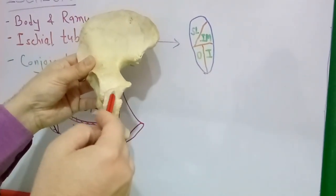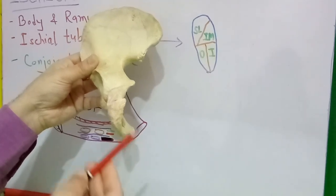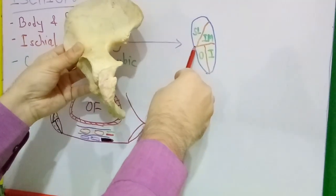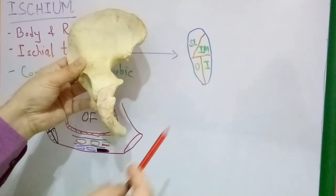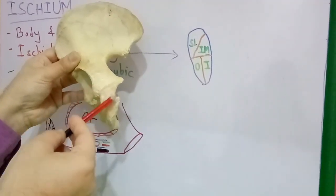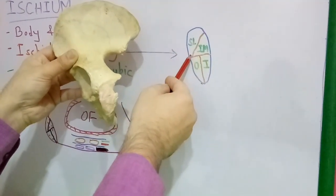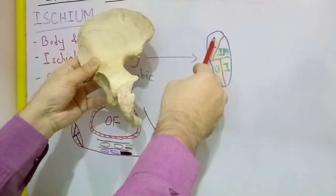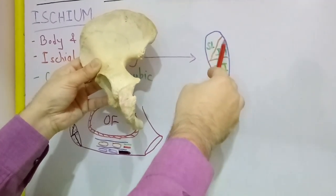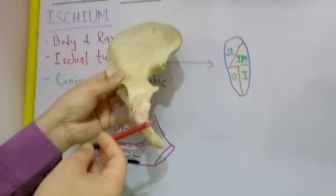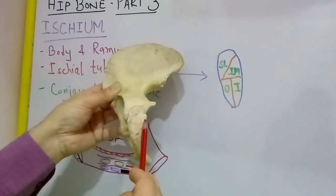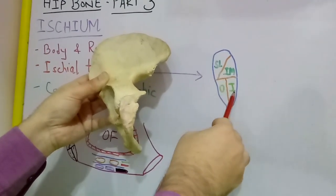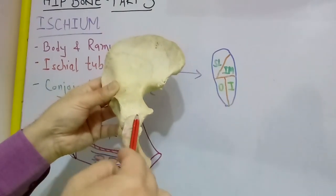The ischial tuberosity is a very important part of the ischium. We can divide it into an upper part and a lower part by a transverse ridge. The upper part is again divided by an oblique ridge into a superolateral part and an inferomedial part. The lower area is divided into outer and inner parts by a vertical ridge.